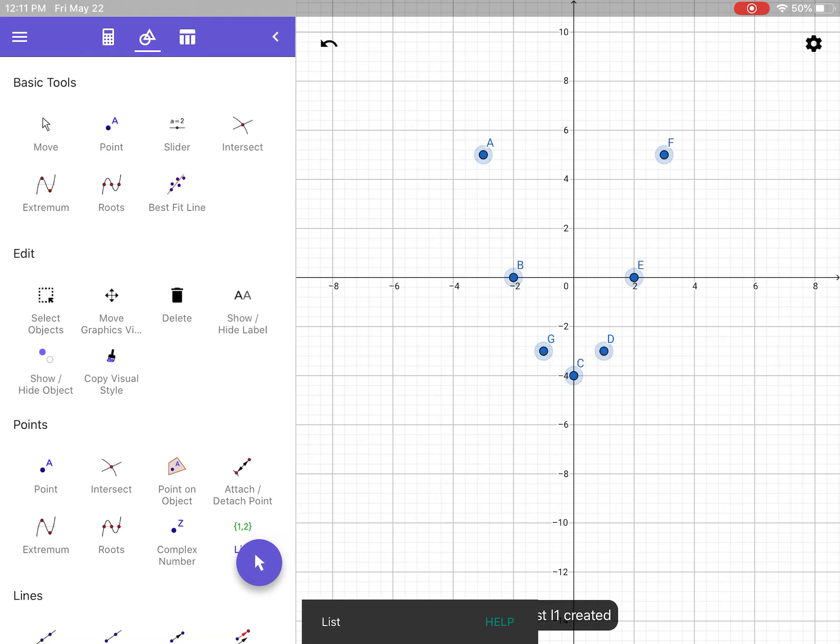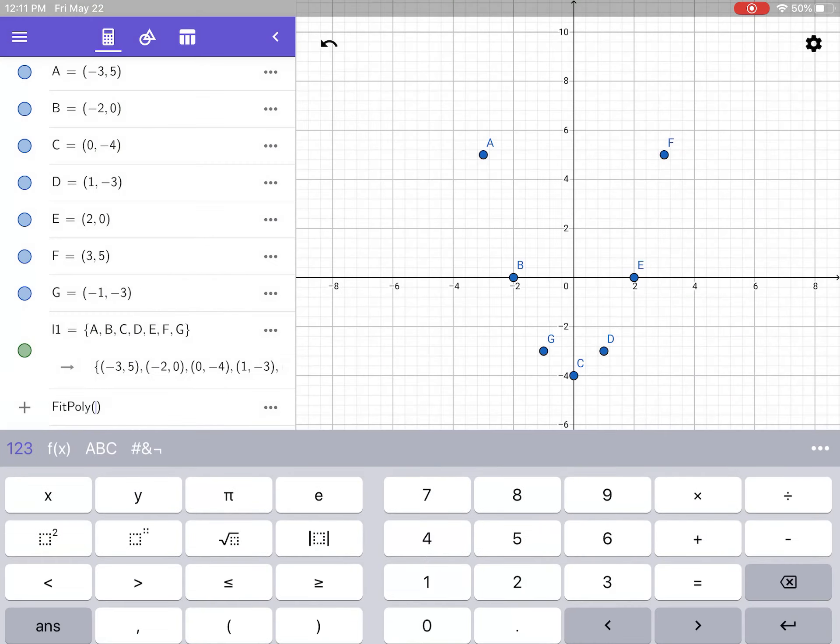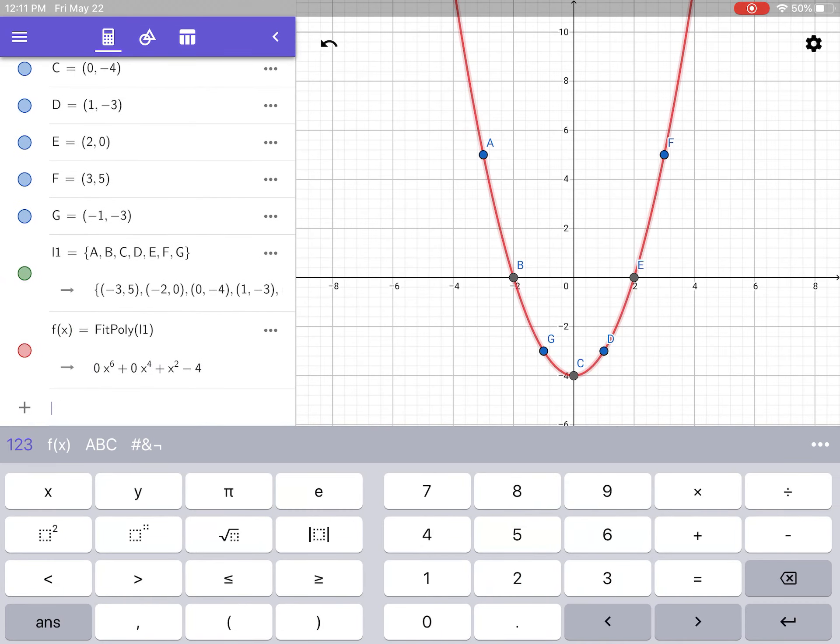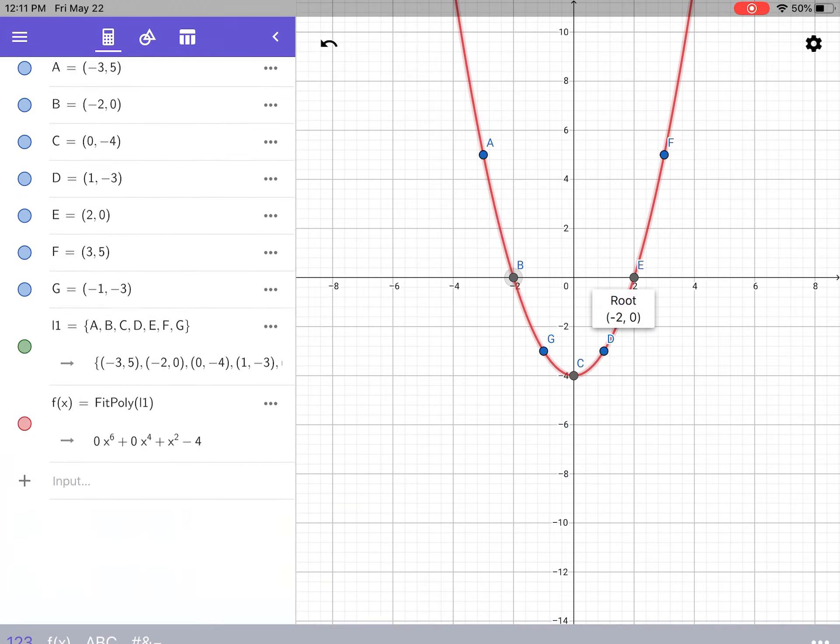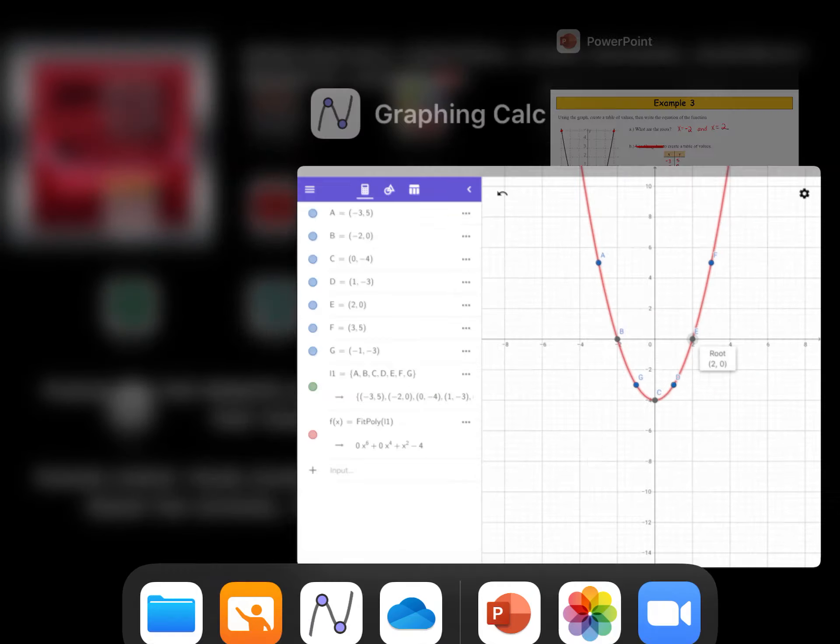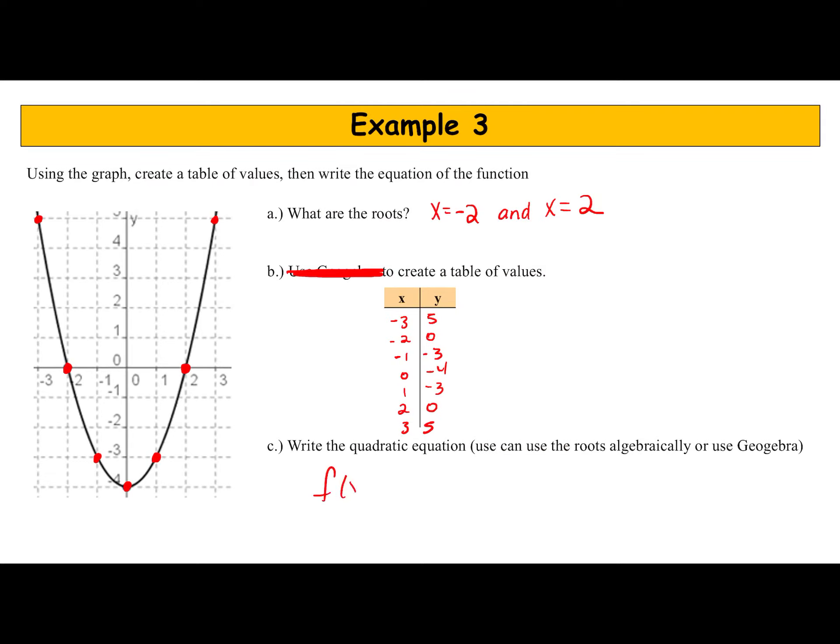Now it should all be there. Let's create a list: drag and let go. Calculator, new line, dot dot dot, fit poly, L1, enter. There's your equation. I can see my roots are negative 2, 2, the same as what I had before. And now for the equation, I have x squared minus 4. Again, I'm not using anything with a 0 in front of it. I just want x squared minus 4. So f(x) equals x squared minus 4, and we're done.